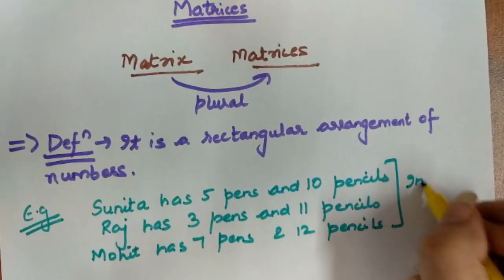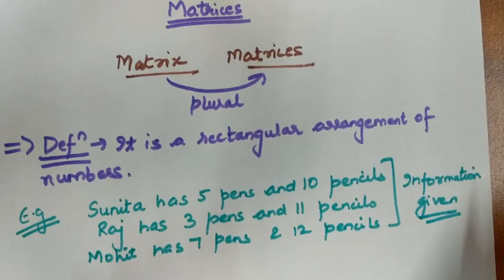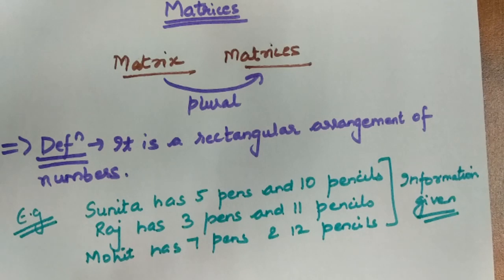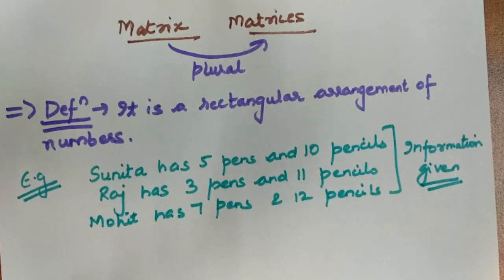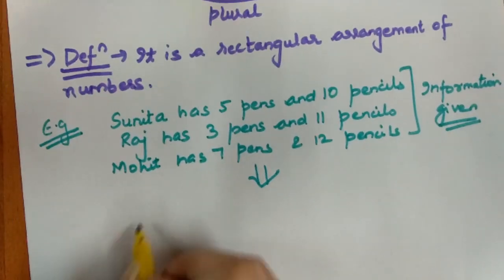This information is given to us. By chance, if we have information that in a school, in a class, there are 30 students, and we need to know how many pens and pencils each has — if we express the information as statements, it becomes very difficult. So we use a tabular form.